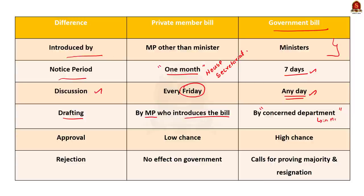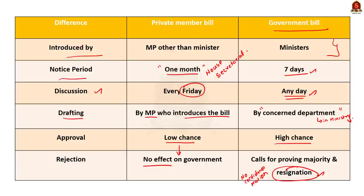The final difference is regarding approval and rejection. A private member's bill has less chance of approval. And if a private member's bill is rejected, it does not have any effect on the government's position. But in the case of a public bill, it has a high chance of approval. If a public bill is rejected, it means the government does not have majority in the house, which calls for a no-confidence motion. If the government cannot prove its majority, the council of ministers headed by the prime minister will resign.